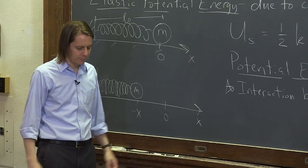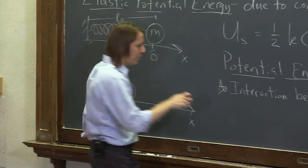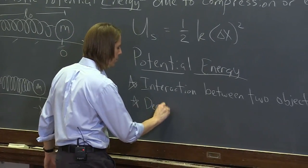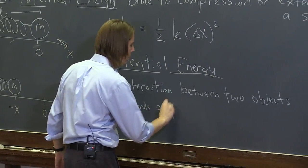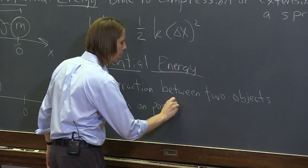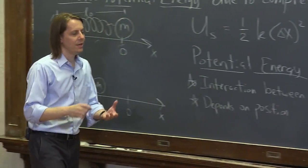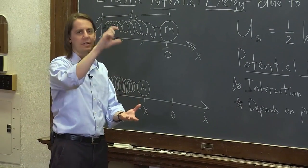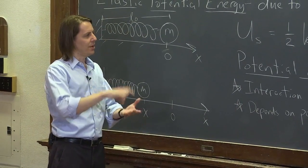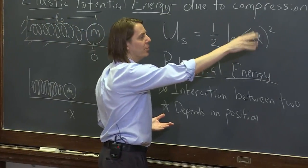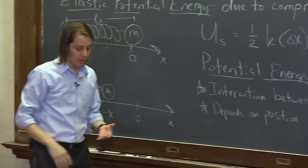It also has the characteristic that it depends on position. It might do so in different ways—gravitational just varies with your height as you move up and down in the gravitational field of the Earth, and spring depends on your position squared just because of the nature of the spring force. But depending on position is another key that something is a potential energy.